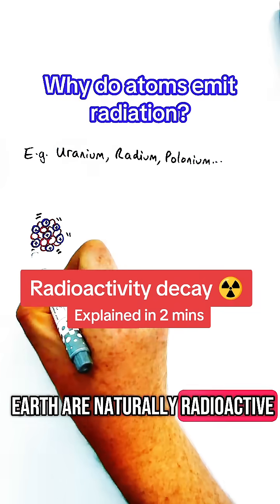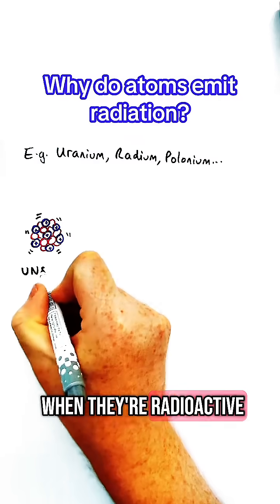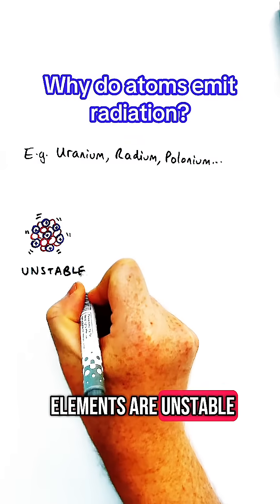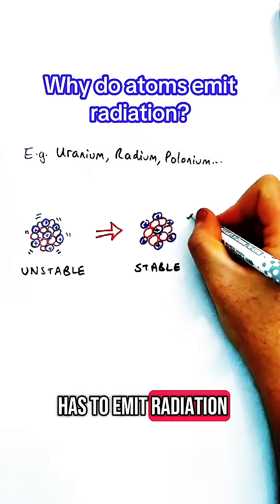Some elements on Earth are naturally radioactive. When they're radioactive, it means an atom of these elements are unstable, and to become stable again, it has to emit radiation.